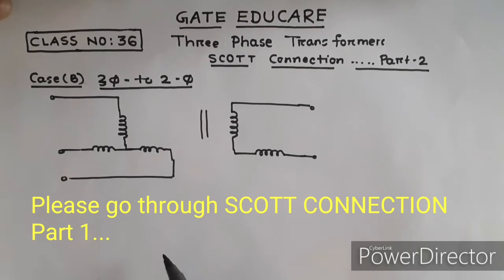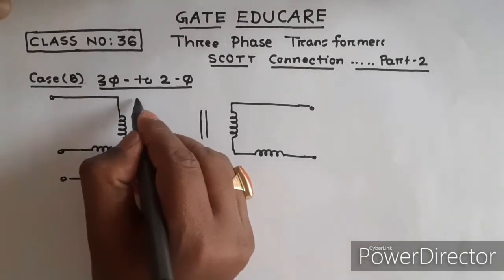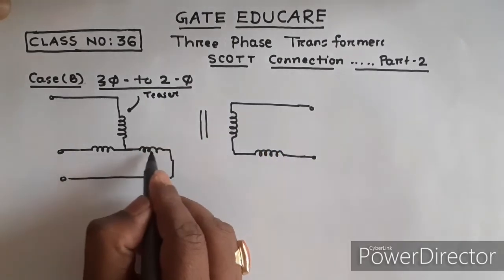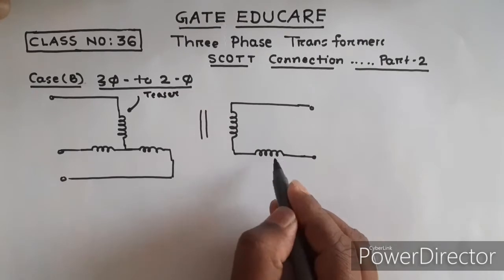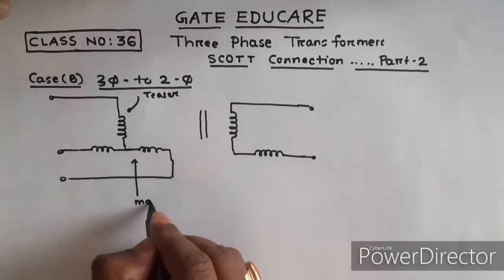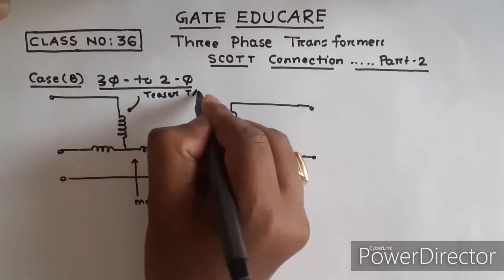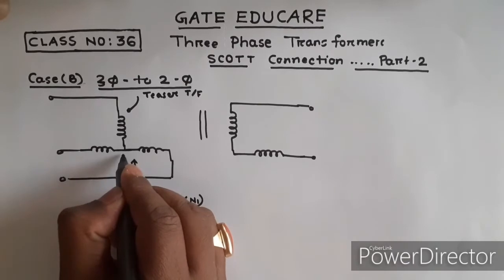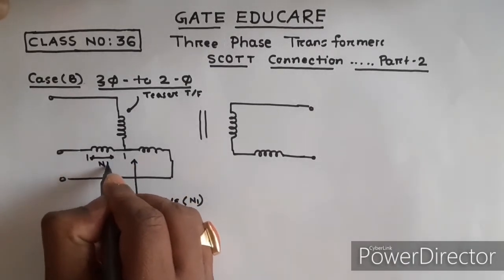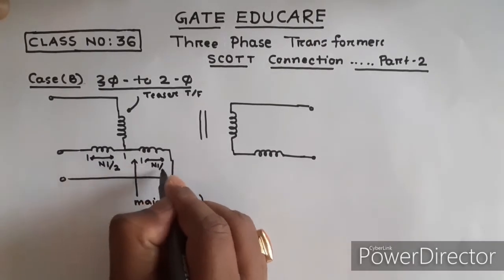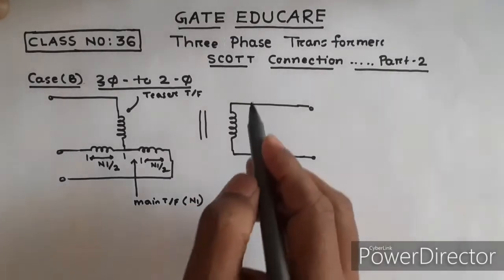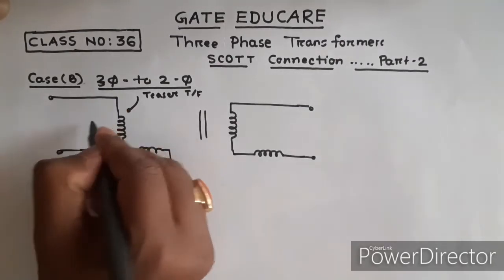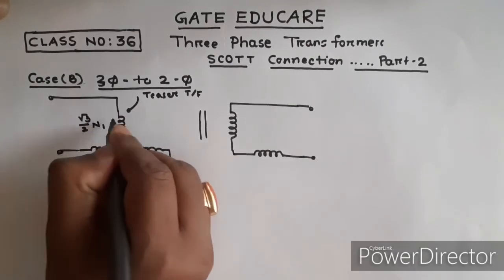As explained earlier, this is the primary of the teaser transformer and this is the secondary of the teaser transformer. This is the primary of the main transformer and this is the secondary of the main transformer. If the main transformer primary has N1 number of turns, it should be center-tapped, meaning each half has N1/2 turns. The teaser primary winding has root(3)/2 × N1 number of turns.